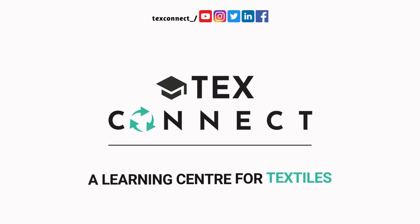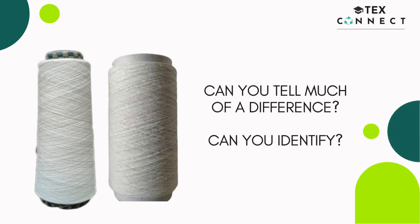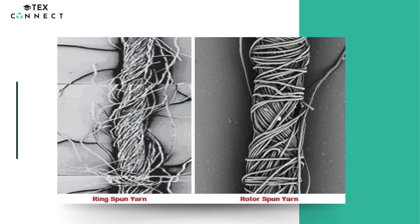Hey guys, welcome back to TexConnect. Tell me the difference between the two yarn strands that are visible. It's difficult, right? Now what if I zoom in a little? Can you make out a difference between the two? The left one is the traditional ring spun yarn and the right one is a rotor spun yarn. Let's discuss.